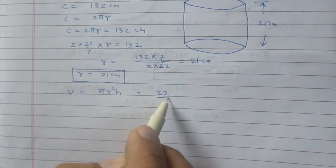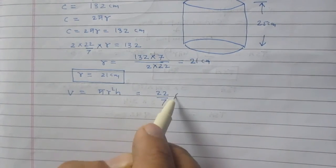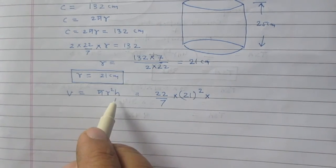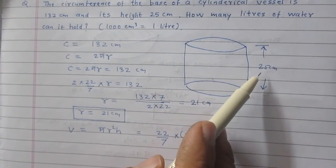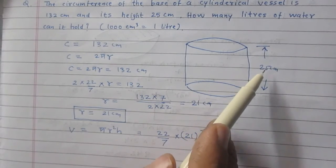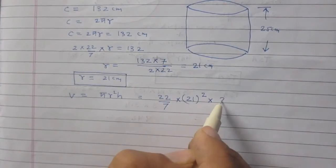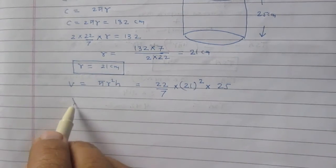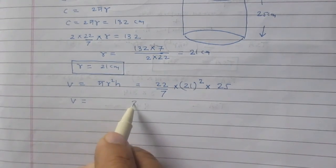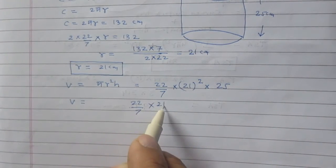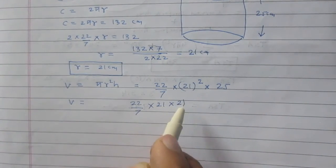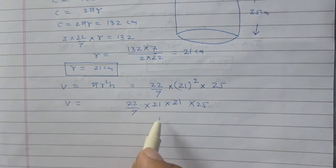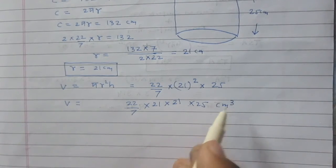π is 22/7, r² is nothing but 21 square, and h, the height of the cylinder, is given to us as 25 cm. So volume of the cylinder is 22 divided by 7, then 21, then 21, and then 25. All terms are in multiplication but this is in centimeter cube.